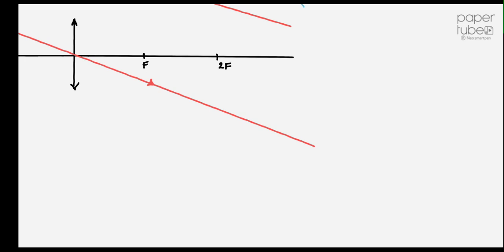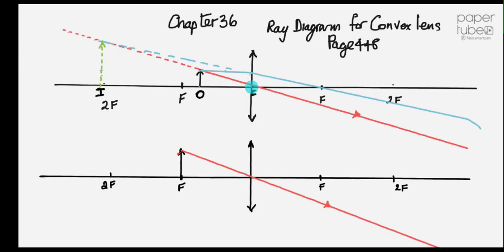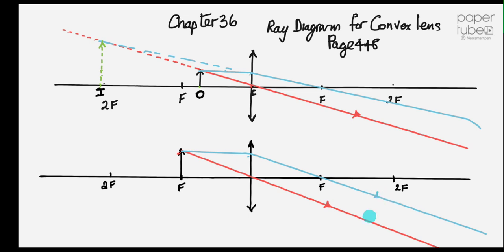The second ray — blue. A ray parallel to the principal axis is refracted through f, bent through f. See the blue one. And if you've drawn these right, these are parallel lines. Parallel lines — they don't meet. There is the object and there is no image, because parallel lines never meet.